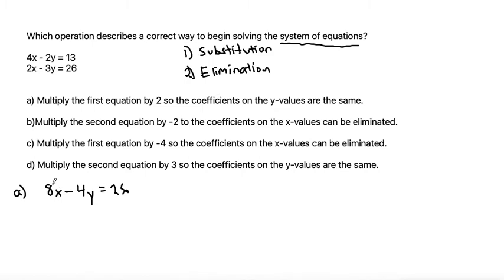So if we multiply by 2, let's check to see if the y-values, the coefficients on the y-values are the same. The second y-value has a coefficient of negative 3. So are the two coefficients on the y-values even the same for A? They're not, so we know that that's not the correct answer.